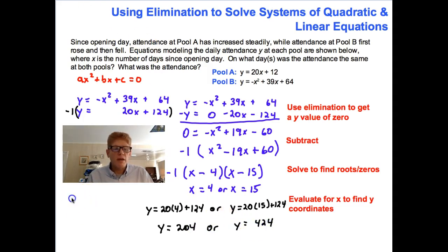Just thinking about these as points, when they intersect with our graph, we would have points (4, 204), or point (15, 424). But think about it in terms of the question itself. On what days was the attendance the same? Well, it was the same on the 4th and the 15th day. However, attendance at the pools on day 4, on day 4 the attendance was 204, and on day 15 it was 424. There you go.